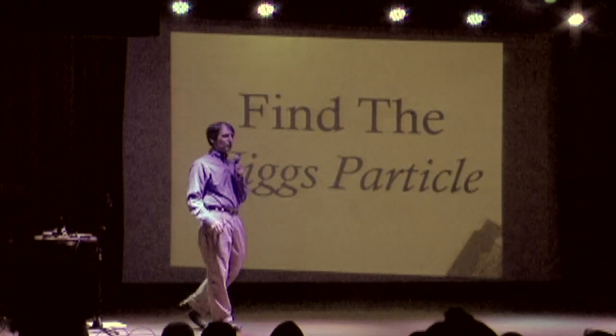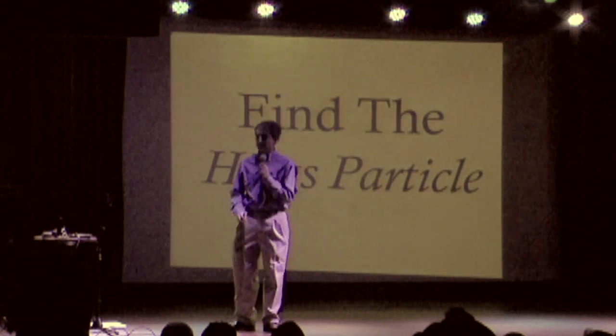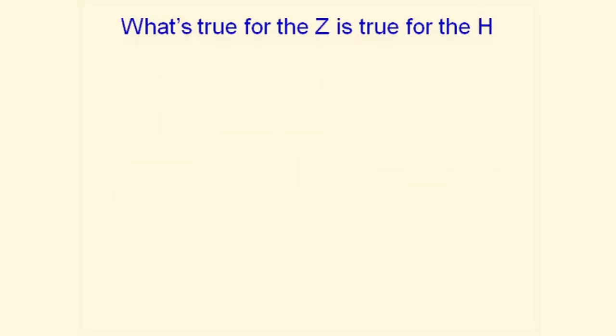Well, I've told you about the Z particle. Now we are ready to find the Higgs. Are you ready? All right. Now what is true for the Z particle is also true for the Higgs. Basically, the same idea. Remember that we made Z particles by colliding up quarks and up anti-quarks, and then the Z falls apart into a muon and anti-muon. And we're going to do the same thing, almost, for the Higgs.